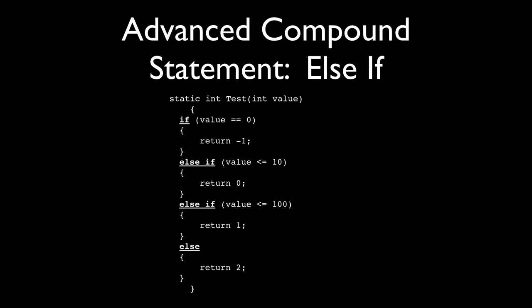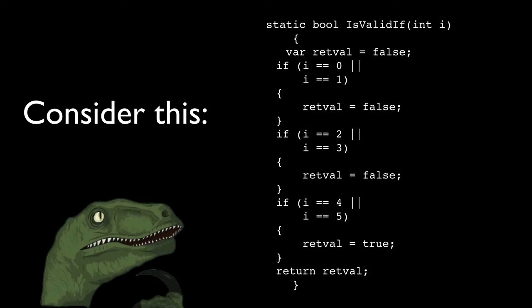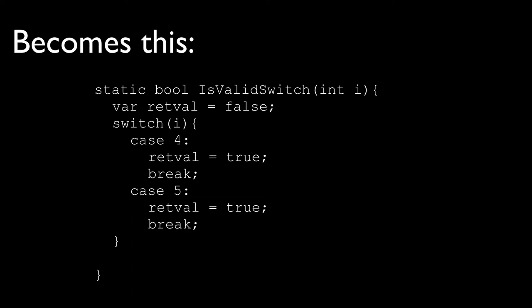If-else-if chains can get long and drawn out, so C# offers another way to handle conditionals: switch statements. Consider a number of stacked if statements — you can make this cleaner and more readable using a switch statement. The syntax is quite different: there's no if statement at all. Instead, the switch keyword — also a method with parentheses — takes a single argument, and based on the value of that argument, evaluates the various cases.